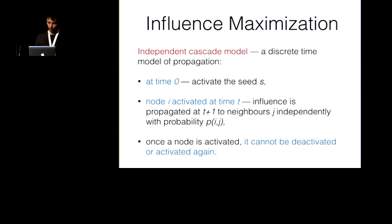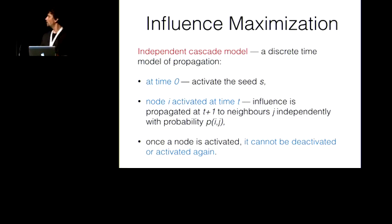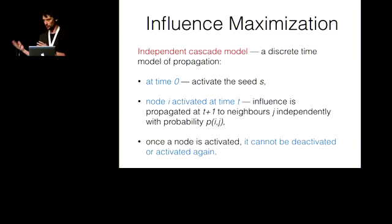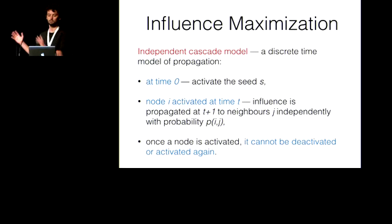Given this influence graph, there are several models of influence propagation. The simplest and most intuitive is the independent cascade model — a discrete time model in which at time zero you activate the seed nodes, and then iteratively, a node i activated at time t propagates influence at t+1 to neighbors j independently with the edge probabilities. Once a node is activated, it cannot be deactivated or activated again, so the process eventually stops.